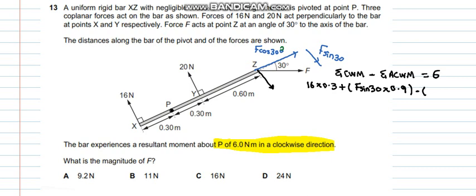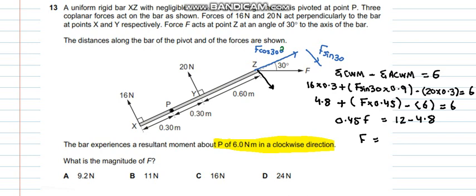These are the two forces for the clockwise moment. Now let's talk about the anticlockwise. There is only one force in the anticlockwise moment which is the 20 N force. 20 into 0.3 minus 20 into 0.3 which becomes equals to 6. So solving this up for F, this would make up 4.8 plus this would make up half into 0.9. So this would be F into 0.45 minus 20 into 0.3 is 6. So 0.45 F equals to 6 plus 6 is 12 minus 4.8.